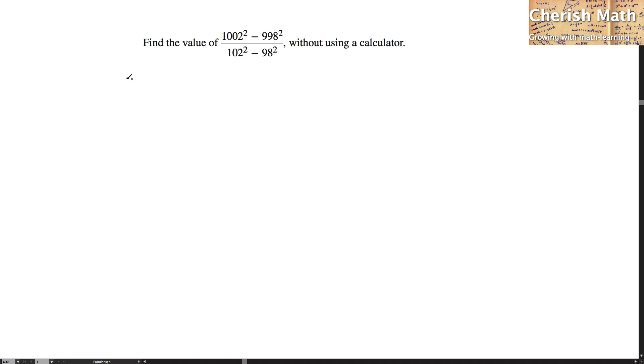The first step in solving a problem here is by using a number to replace 998. And that number is in fact 1002 minus 4. That would be 1002 to the power of 2 minus 998 is 1002 minus 4 followed by the square.